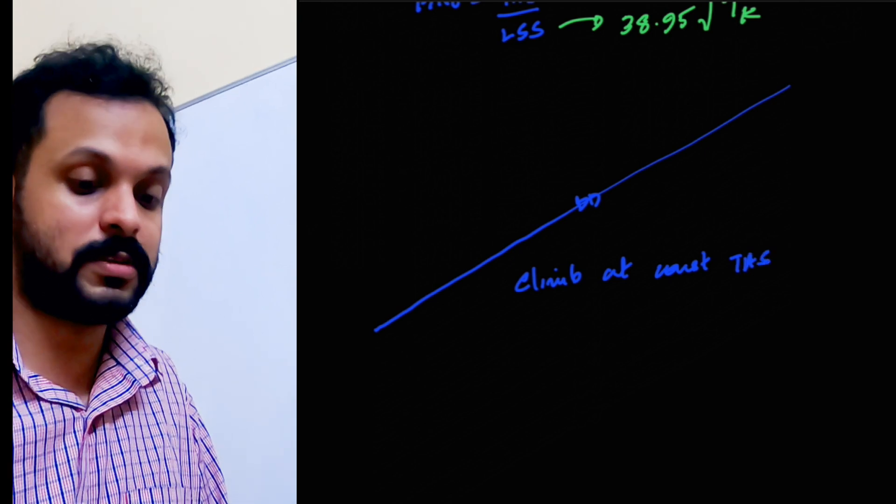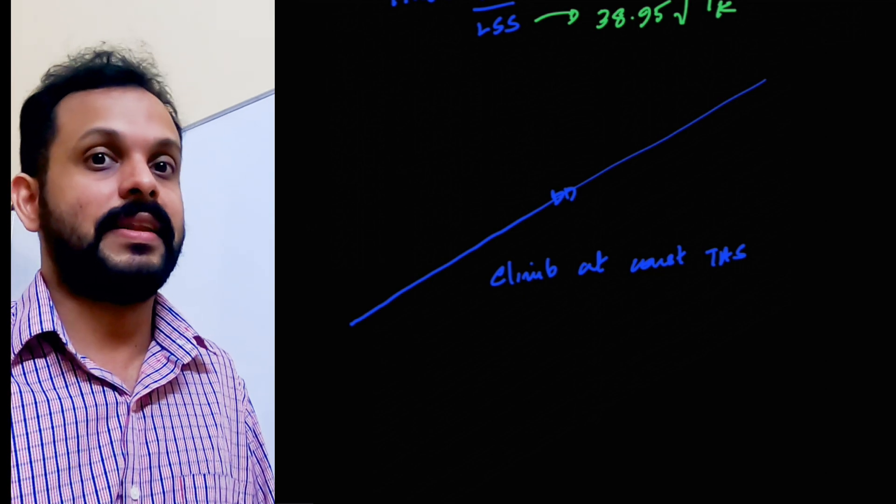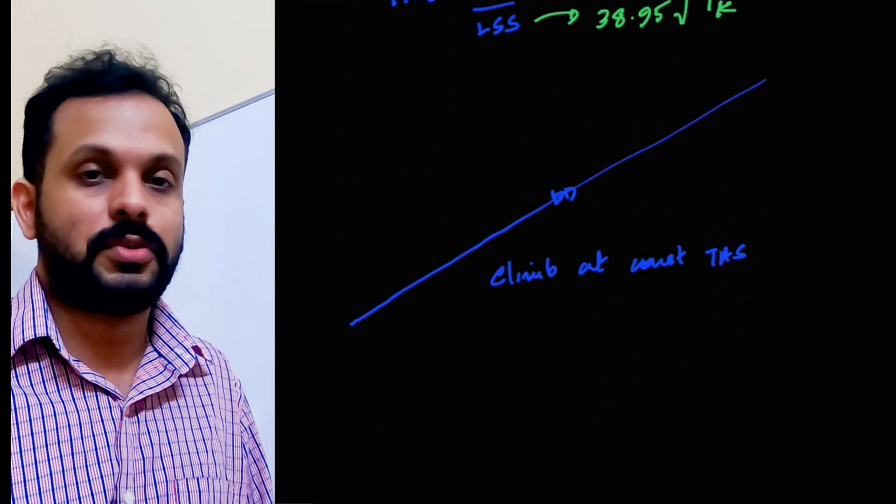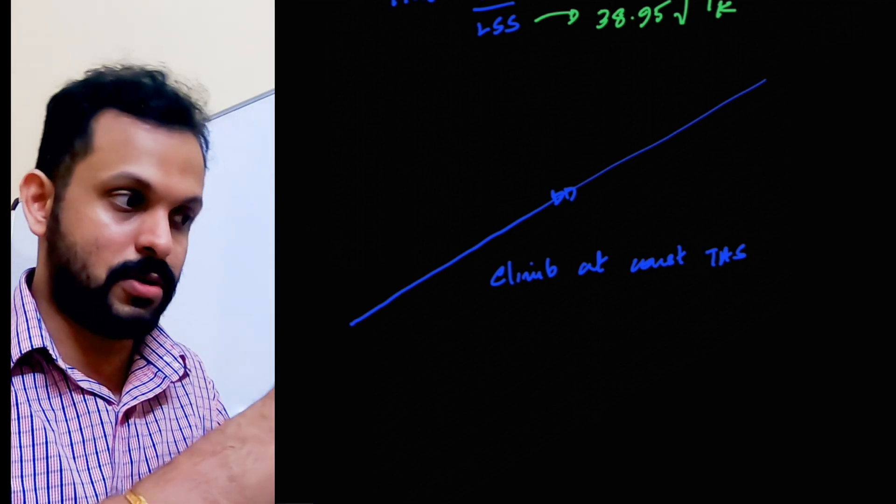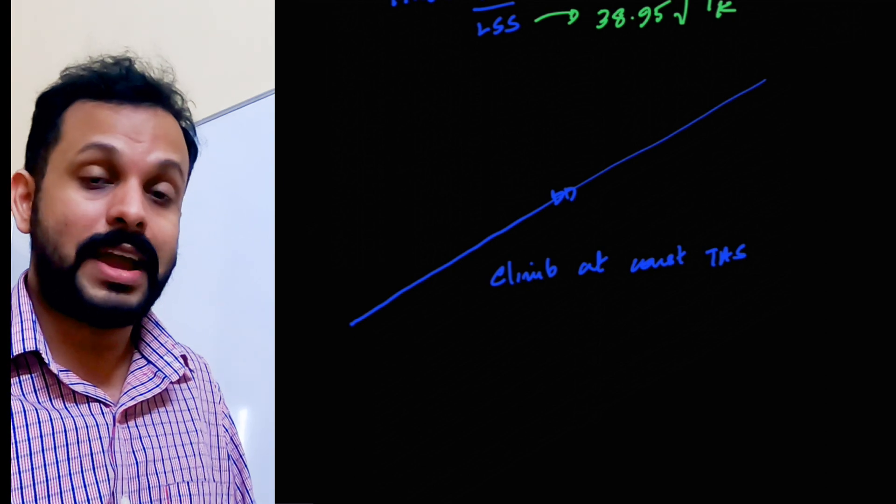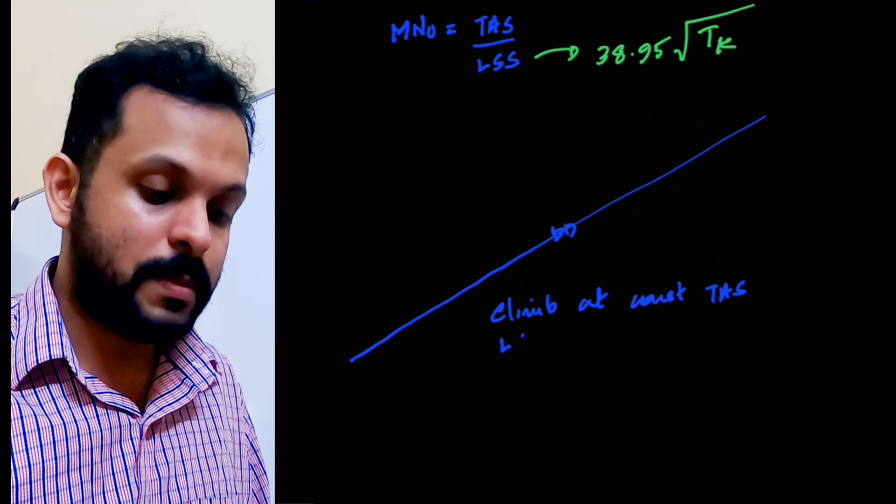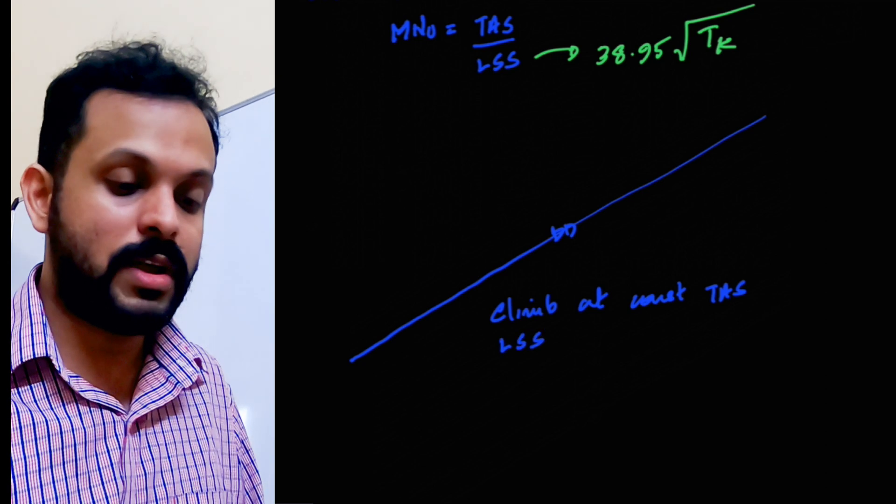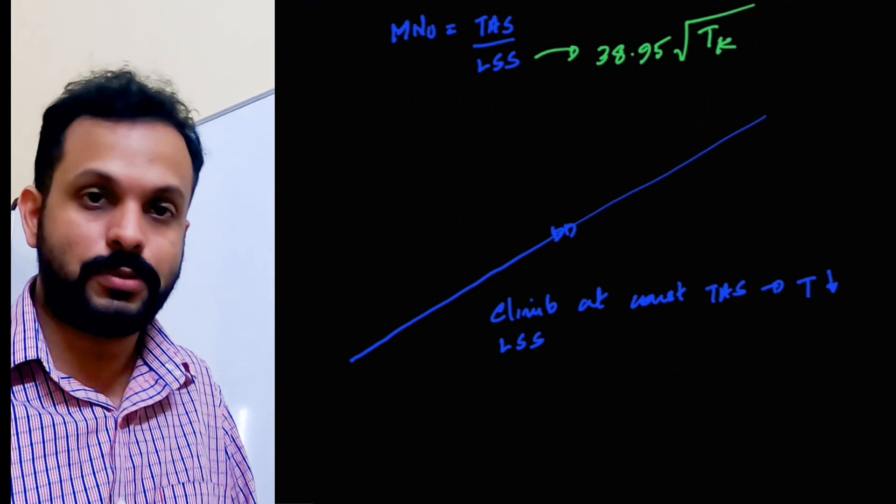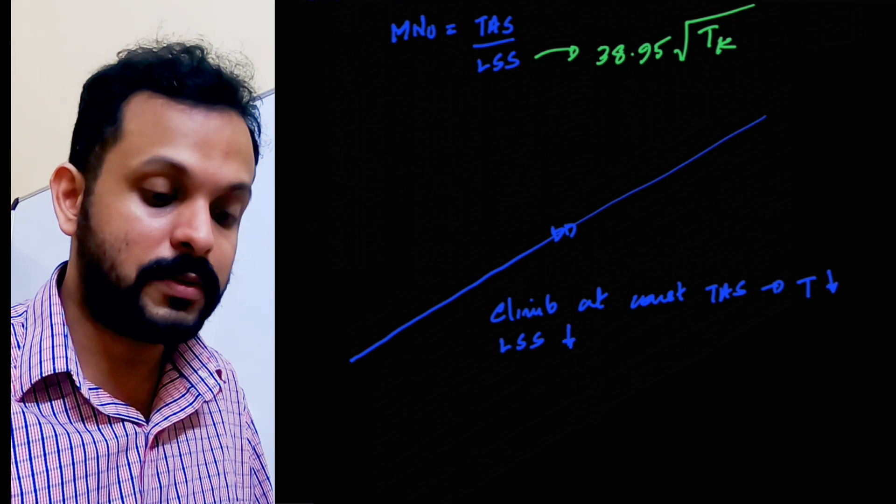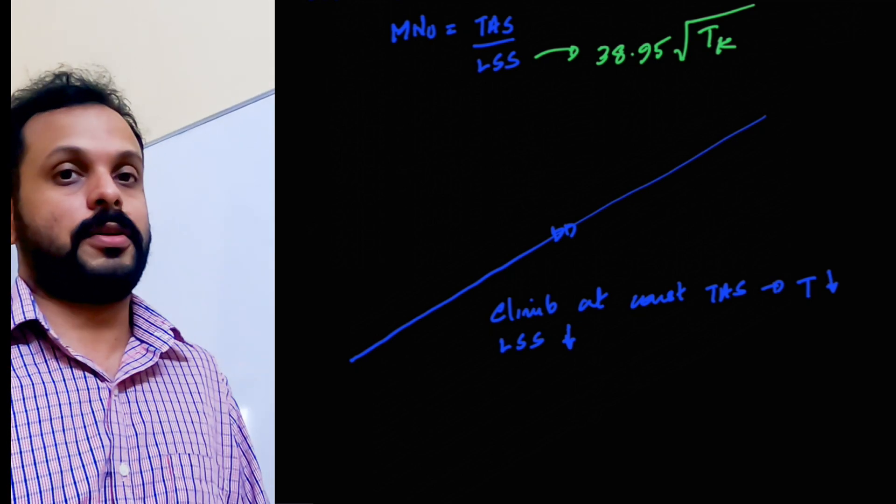This is not really going to be helpful to us because the indicated airspeed is going to progressively reduce because of a reduction in density and hence the dynamic pressure. But for the sake of this question, let us assume a climb at a constant TAS. You can see the airspeed indicator coming down all the way. So when you climb at a constant TAS all the way up, what happens to your local speed of sound? When you actually climb, your temperature keeps on dropping because of lapse rate. And for that reason, your local speed of sound, since it is directly proportional to the root of temperature in Kelvin, also drops.